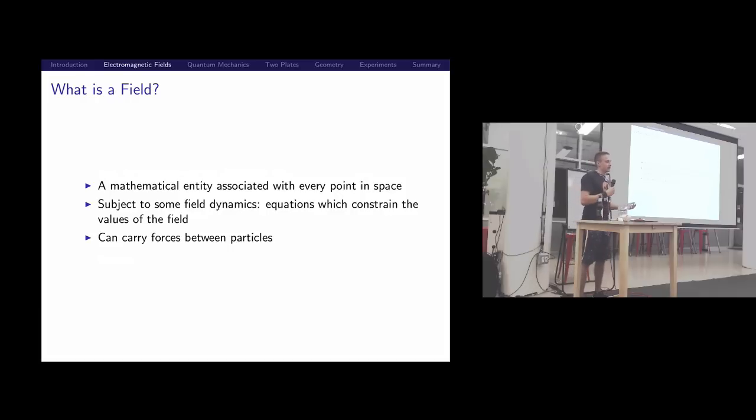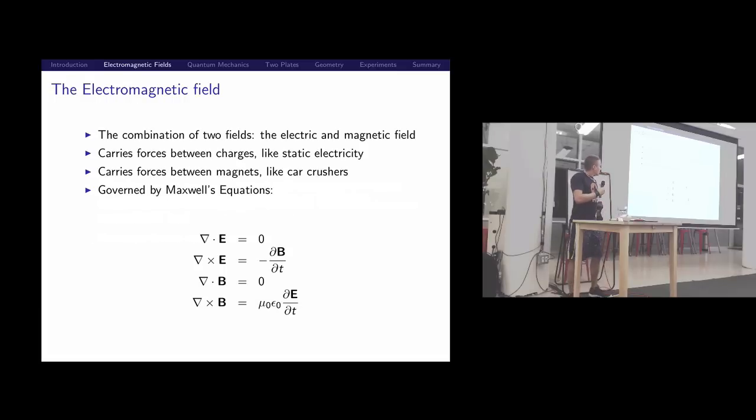Quick primer in physics. A field is an entity, something associated with every point in space. If it's a number field, here might be value one, here's a two, five, one, seven, four. Every point in space has some number. There's going to be field dynamics that relate those numbers. Maybe they have to vary continuously.